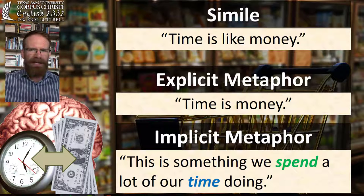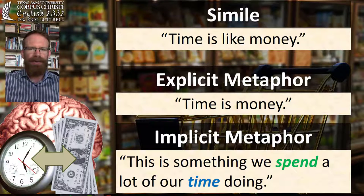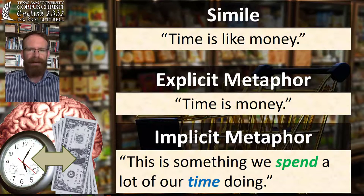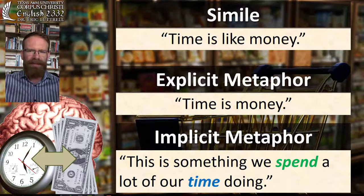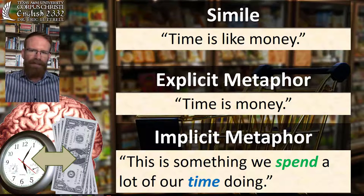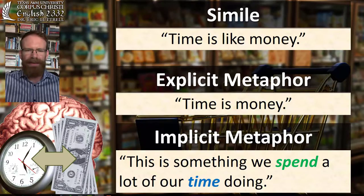However, that first sentence — 'this is something we spend a lot of our time doing' — doesn't state that time is money. It presumes that time is money, or that they operate the same way. You already have to conceive of time as a limited resource that could be exchanged for a commodity in order to even understand that sentence. And because it is such a familiar metaphor, we don't even notice that we are relying on this comparison to hold the concept of time in mind.